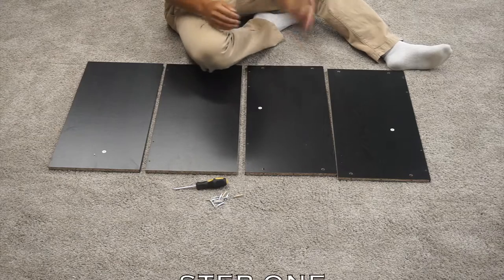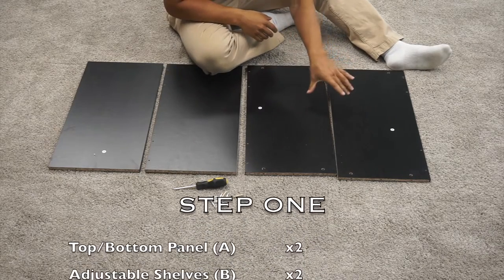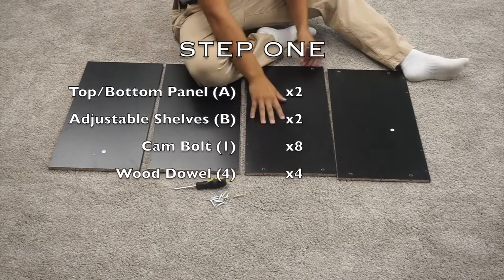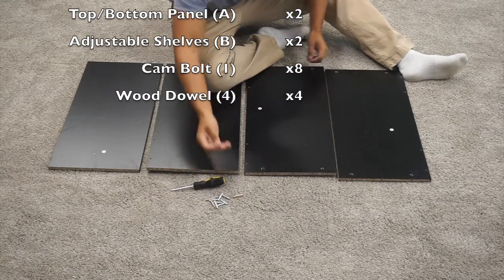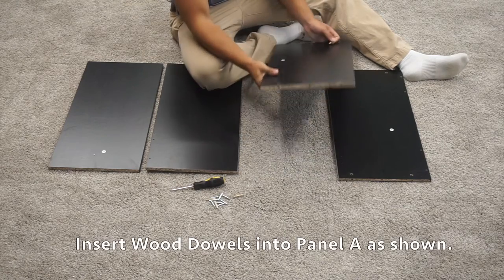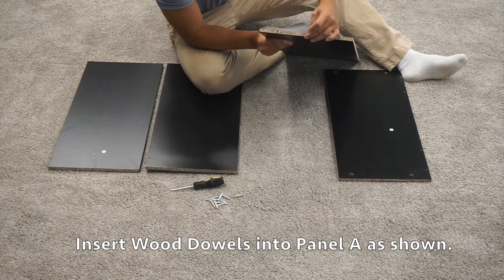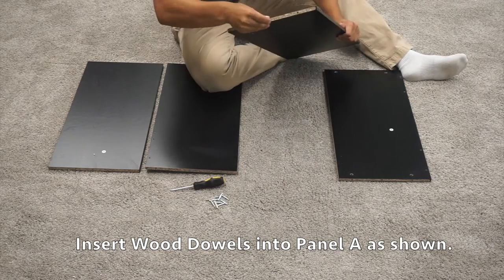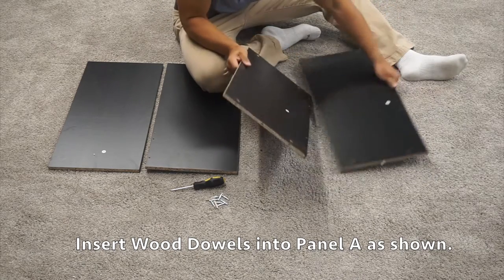If everything is in order, then we can begin assembly. In step one, you're going to need your two A panels and your two B panels. You can start with your A panel and four wood dial pieces. You'll want to insert one into each side in this middle pre-drilled hole and you can grab your other A panel and do the same.